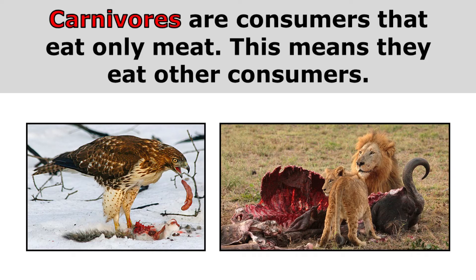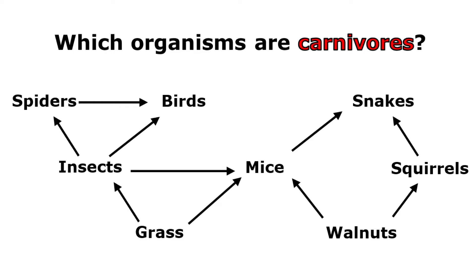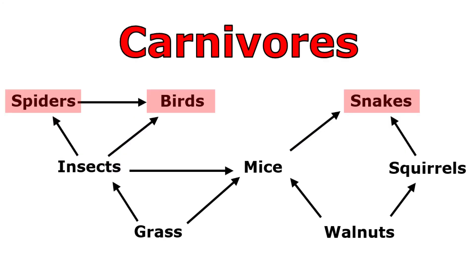Carnivores are consumers that eat only meat, meaning they eat other consumers. This question asks which organisms are carnivores. The spiders only eat insects; the birds are eating insects and spiders, both other animals; and the snakes are eating mice and squirrels. So because the spiders, birds, and snakes are only eating other animals, they are carnivores.